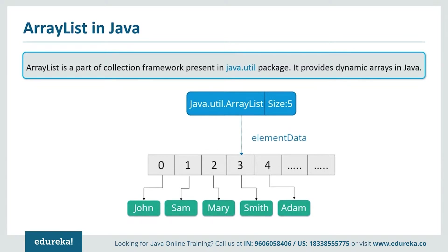ArrayList allows us to randomly access the list. ArrayList cannot be used for primitive types like int, char, etc. To access those, we need a wrapper class for such cases.